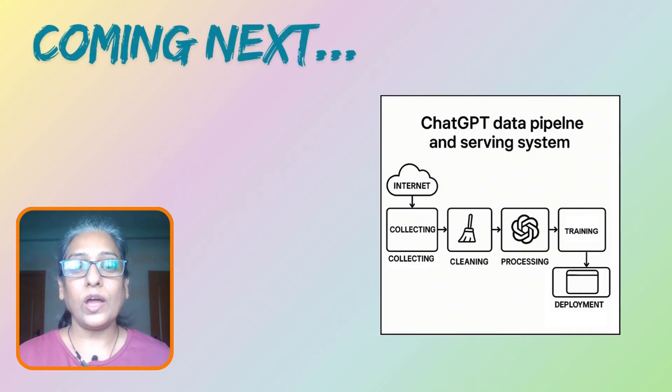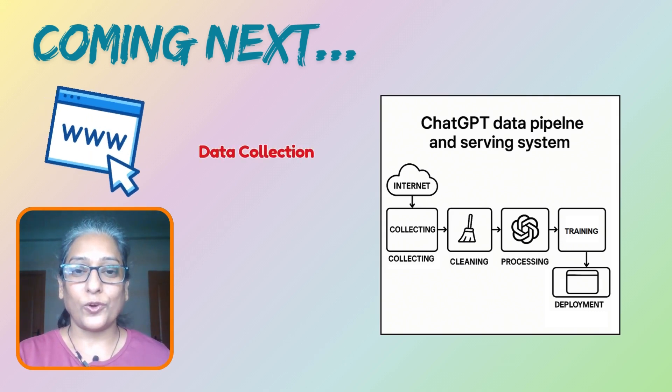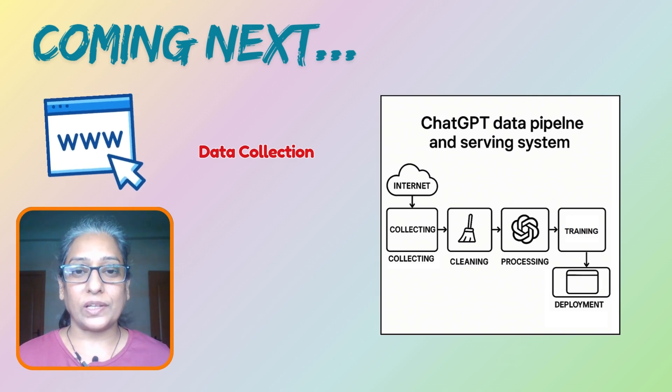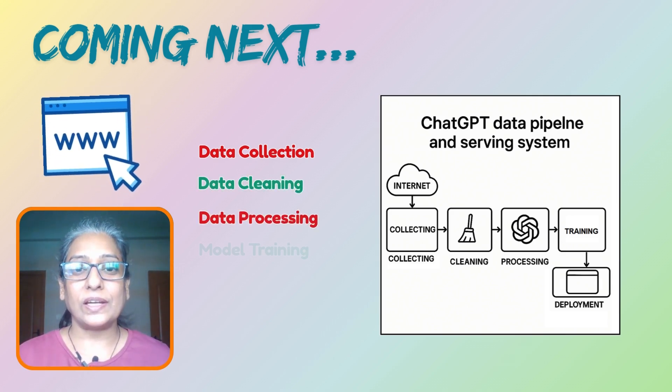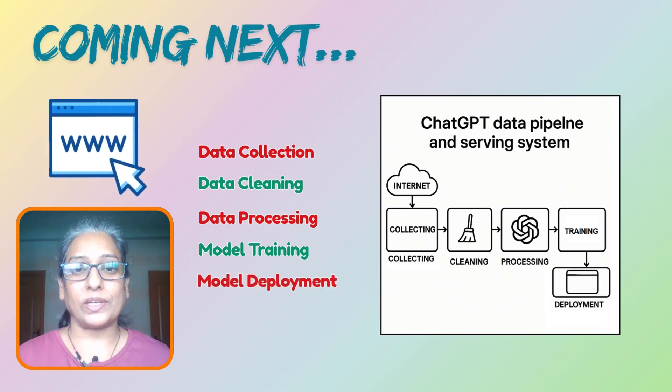Ever wondered how ChatGPT seems to know so much? Where does all that information come from, and how is it processed to make those human-like conversations possible? In today's video we will break down the complete data pipeline behind ChatGPT — from collecting raw text from the internet to cleaning it, processing it, training the model, and deploying it. We will also show you code snippets, tech configurations, and architecture diagrams so it is super easy to follow along.